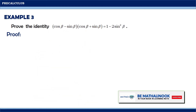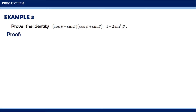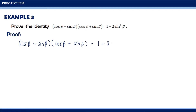For the last one, let us prove the identity: (cosine theta minus sine theta)(cosine theta plus sine theta) equals 1 minus 2 sine squared theta. In this case, it seems we need to manipulate both sides simultaneously. Let us rewrite the given: (cosine theta minus sine theta)(cosine theta plus sine theta) equals 1 minus 2 sine squared theta. On the left side, since this is a multiplication of binomial expressions, we can use the FOIL method.